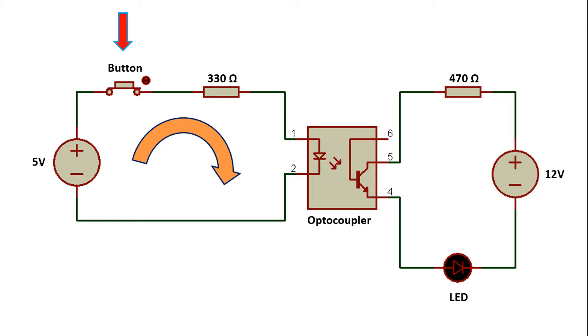With the current flowing through this circuit, the infrared LED in the optocoupler emits infrared light and the phototransistor in the optocoupler is triggered. Then, a high current flows through the circuit on the right.